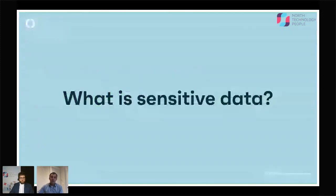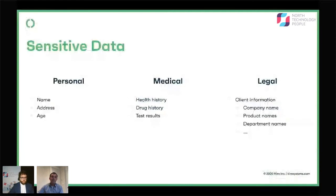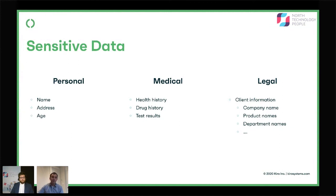What do I mean by sensitive data? There are many types of sensitive data, but some obvious ones might be simple things like your name, your address, your age. Then ones you'll see in the media more often would be things like medical data, health history, history of drugs you've taken, things like test results.